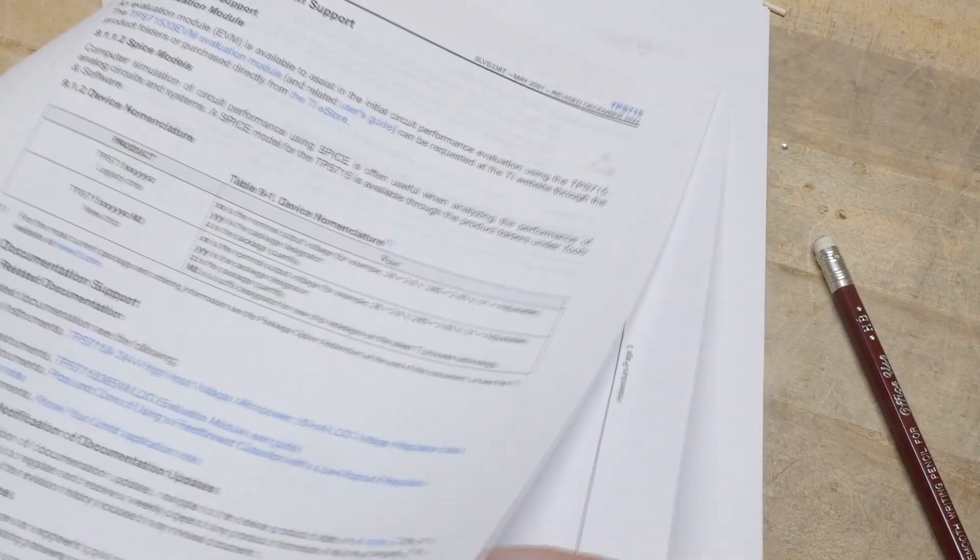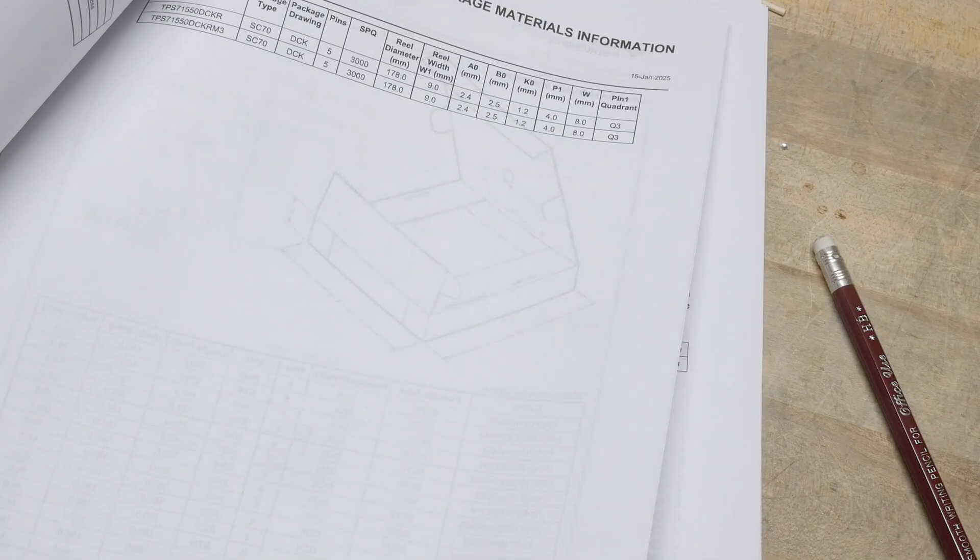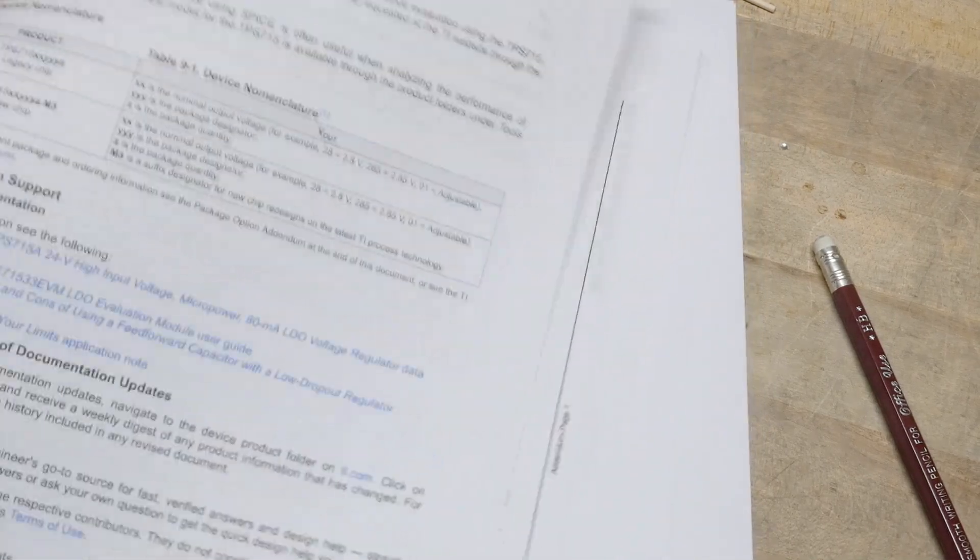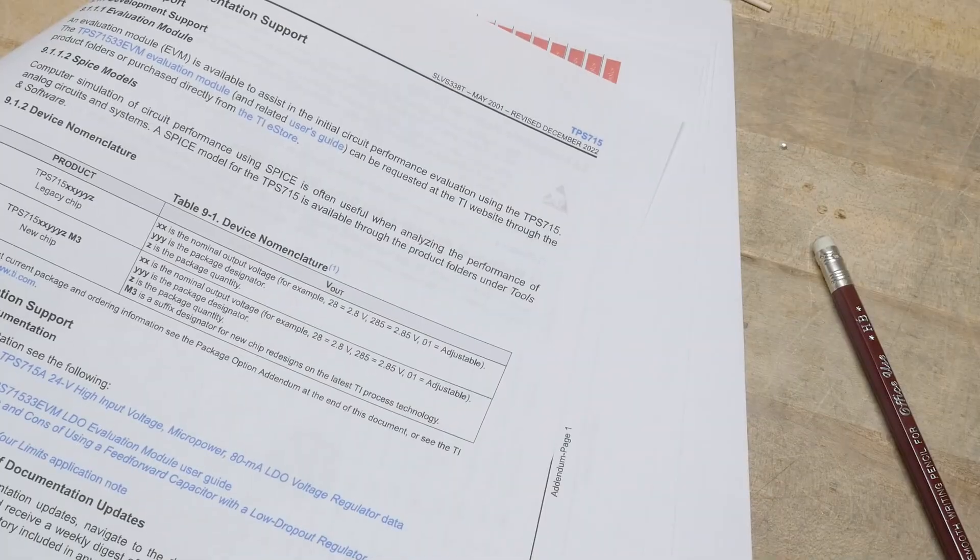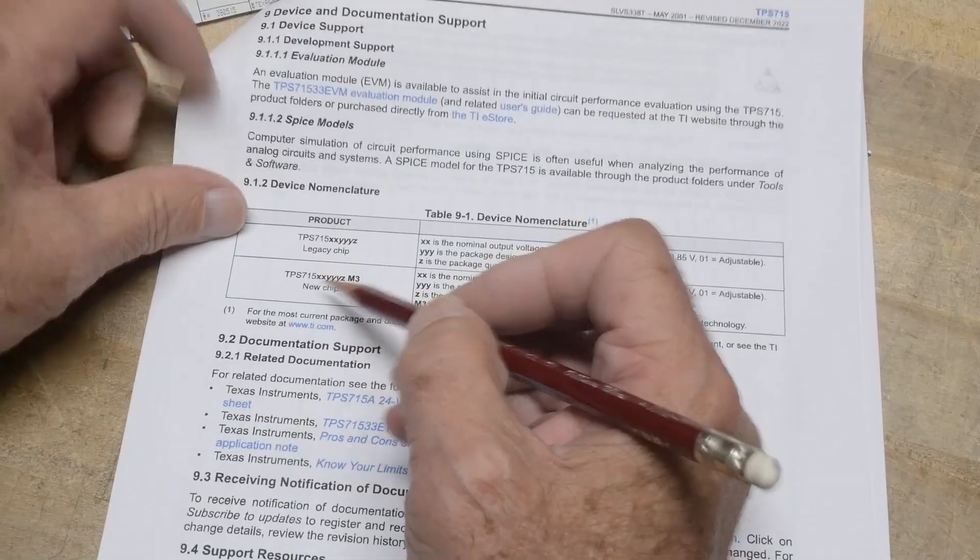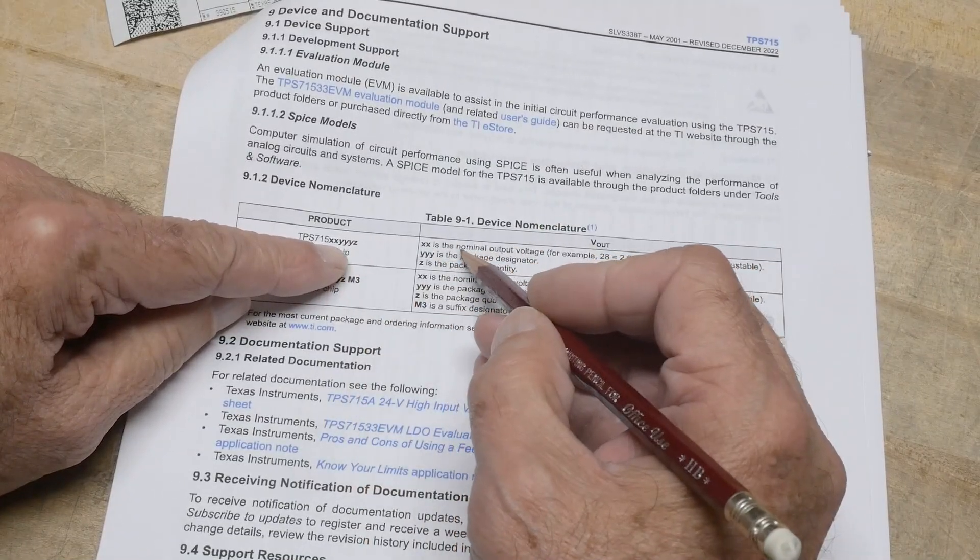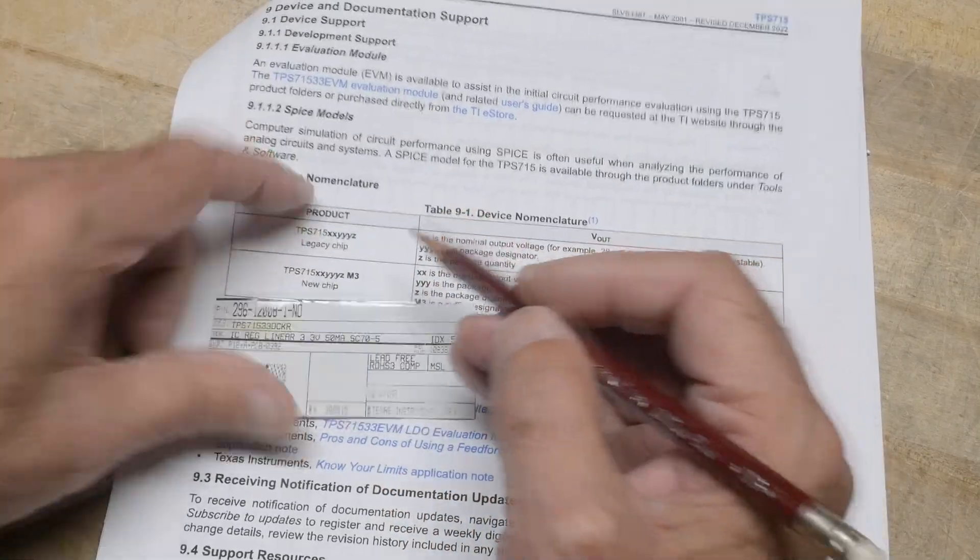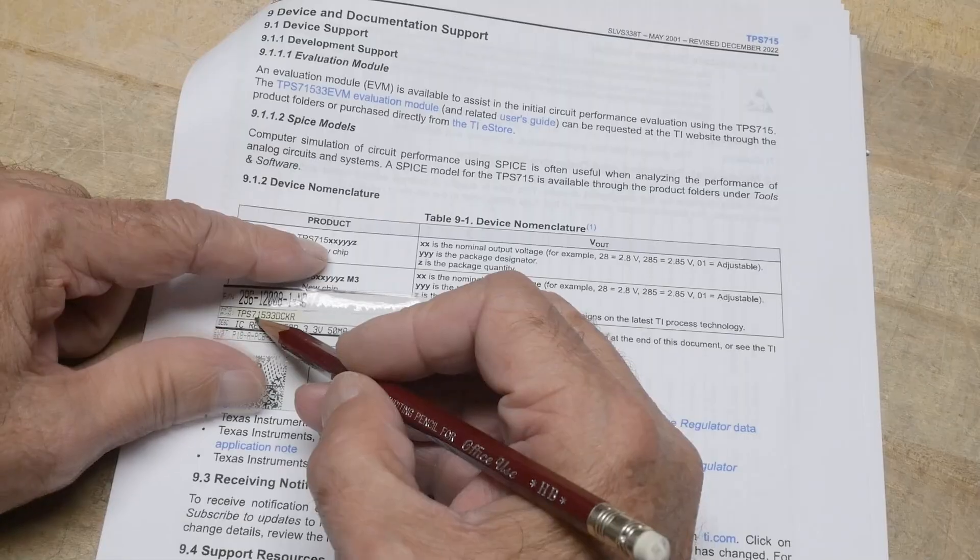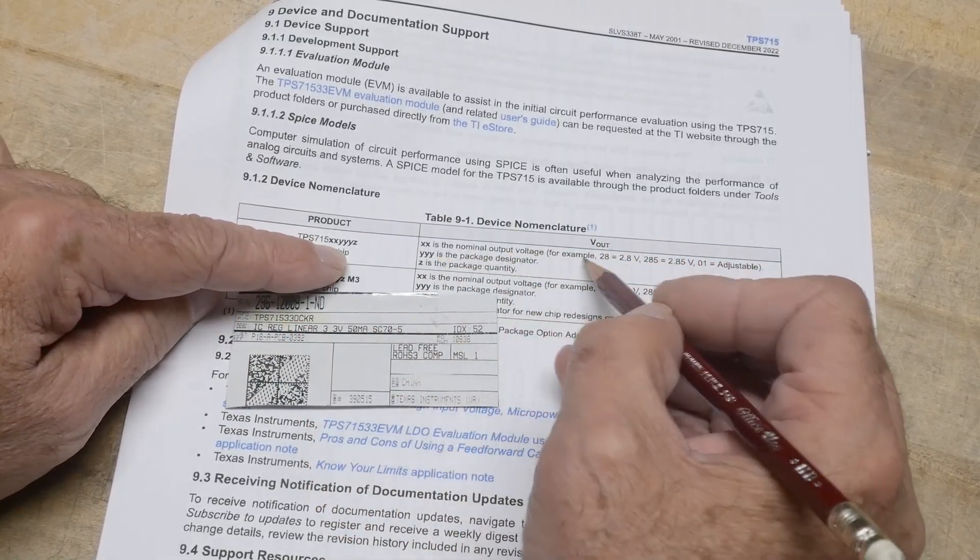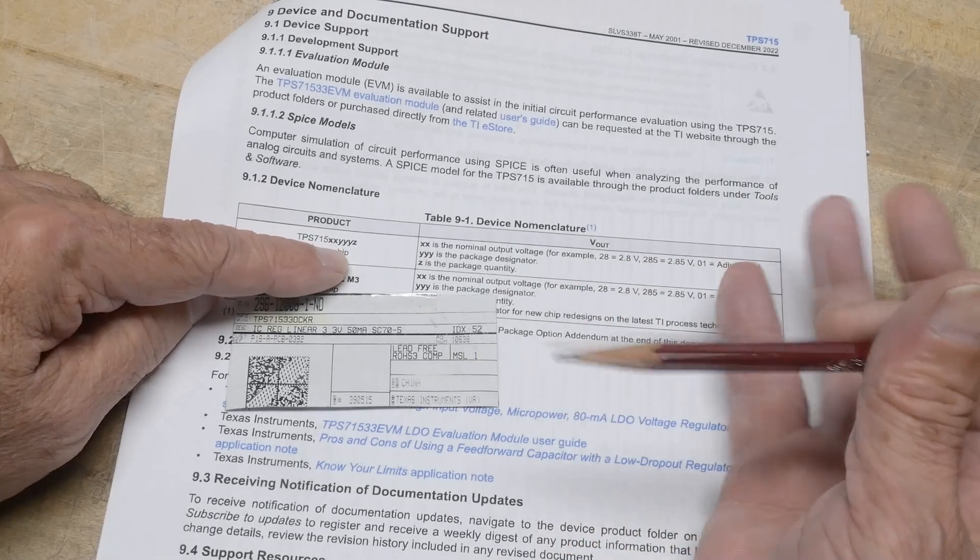I'm still trying to find out all the different part numbers. Package time. Let's see. Must have missed it here. Just a second. Here we go. Device nomenclature. Nominal. Let's see. So it's TPS 715 and then we have 33 that follows that. So 33 is the nominal voltage. For example, 33 equals 3.3. Okay.